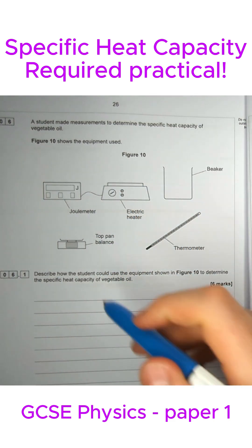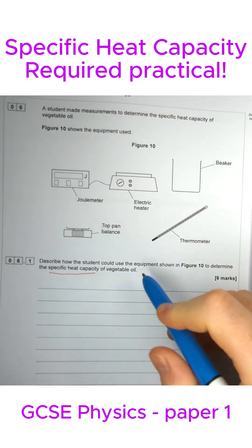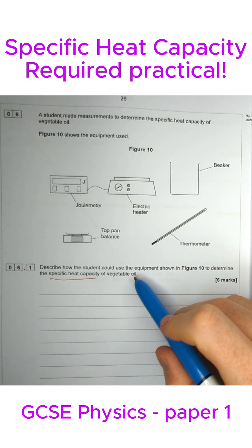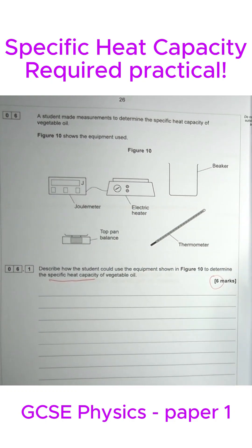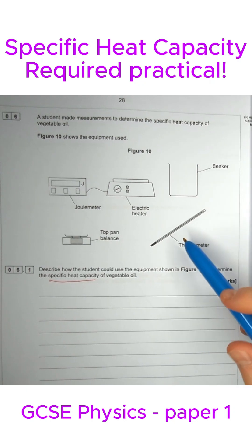This question asks you to find the specific heat capacity of vegetable oil. Normally in classrooms you do this with metal, but if you keep your wits about you and make sure you're mentioning the equipment, then you should be able to get six marks out of six for this method.